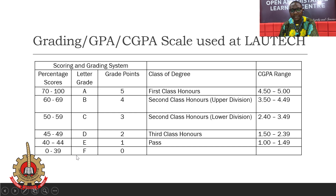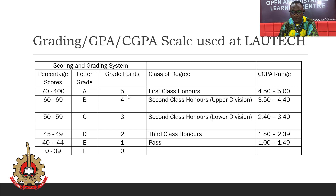Now pay attention to the grade point — it ranges from 0 to 5. If you have an A, your grade point is 5. A B gives you 4. A C gives you 3. A D gives you 2. An E gives you 1. And an F gives you 0. This grade point is what will be used to calculate your GPA and CGPA.